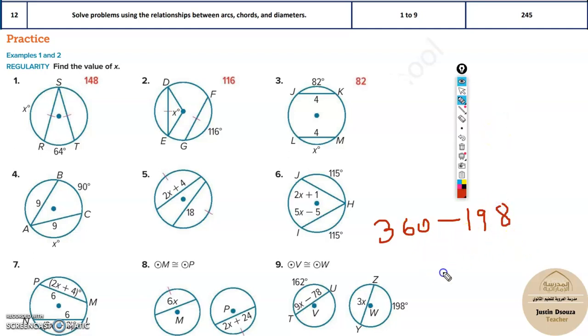You will get 162. So now I know this and this is equal. Even if you do 360 minus this, minus 162, you'll get 198. Now I know these all are equal. This arc is equal, this is equal, this and this. Then I know even this and this chord must be equal.